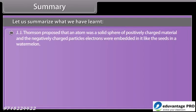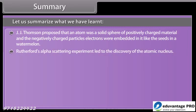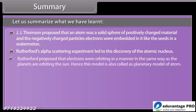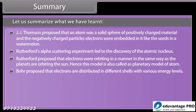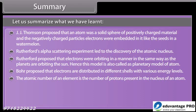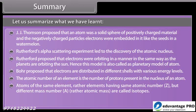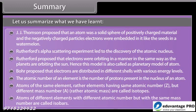Summary. Let us summarize what we have learned. J.J. Thompson proposed that an atom was a solid sphere of positively charged material and the negatively charged particles electrons were embedded in it like the seeds in a watermelon. Rutherford's alpha scattering experiment led to the discovery of the atomic nucleus. Rutherford proposed that electrons were orbiting in a manner in the same way as the planets are orbiting the sun. Hence this model is also called as planetary model of atom. Bohr proposed that electrons are distributed in different shells with various energy levels. The atomic number of an element is the number of protons present in the nucleus of an atom. Atoms of the same element, rather elements having same atomic number Z but different mass number A, rather atomic mass, are called isotopes. Atoms of different elements with different atomic number but with the same mass number are called isobars.